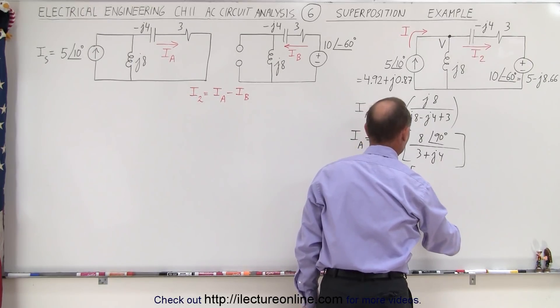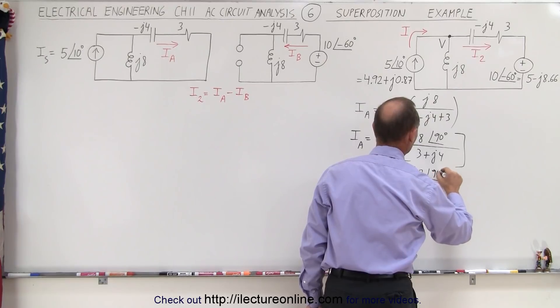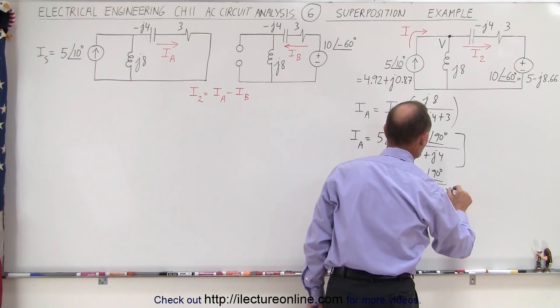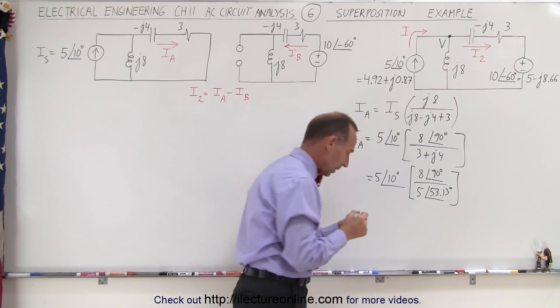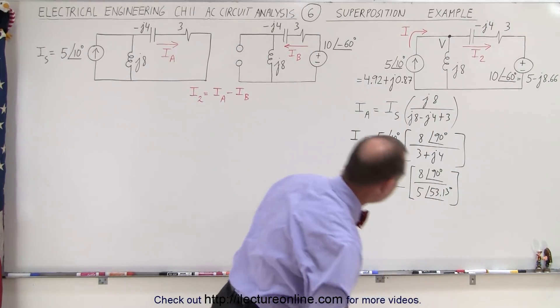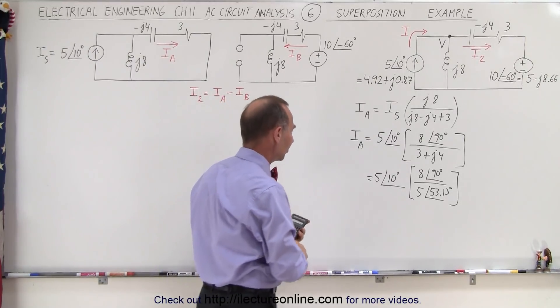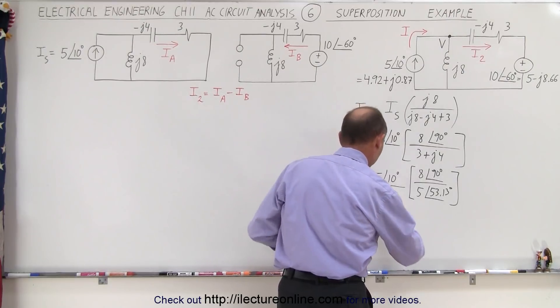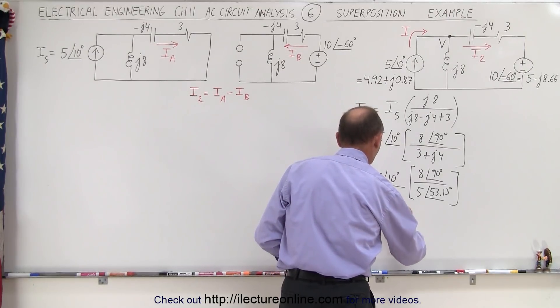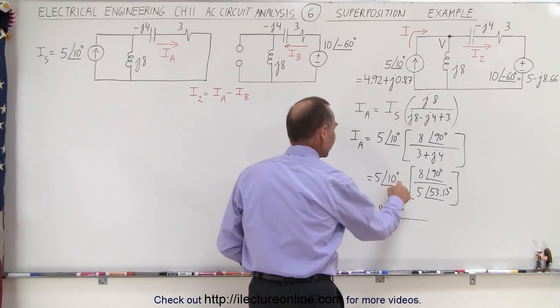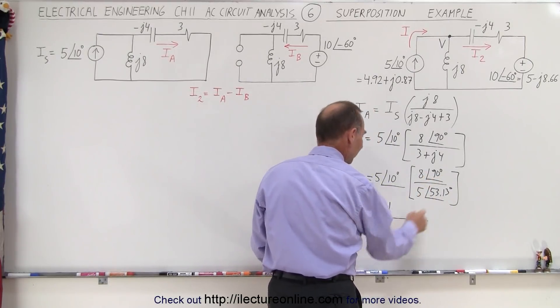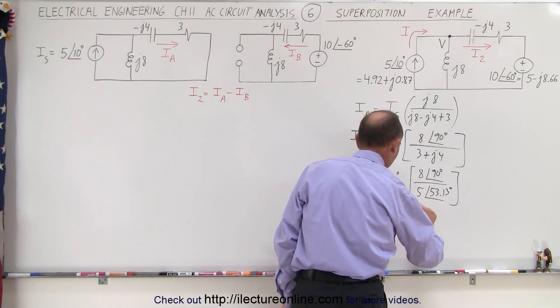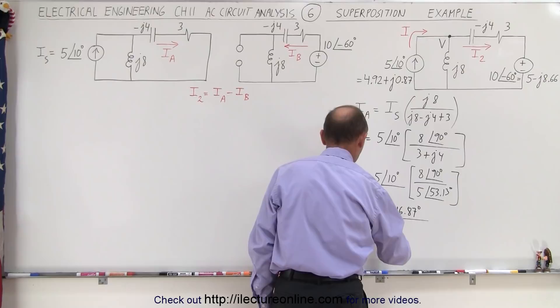And then that would give us an 8 with a phase angle of 90 degrees divided by 5 with a phase angle of 53.13 degrees, and now we're ready to go ahead and work that out. So 5 and 5 cancel out, well actually that's pretty straightforward. That gives us 8 with a phase angle of 10 plus 90, that's 100 minus 53.13, that would be 46.87 degrees. So that's the current IA.